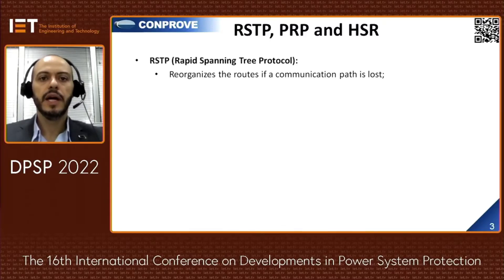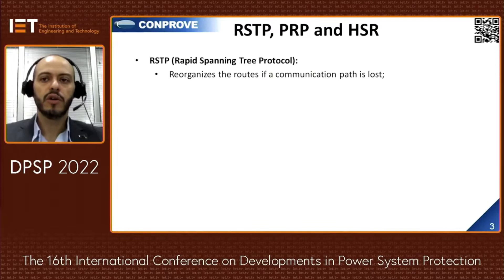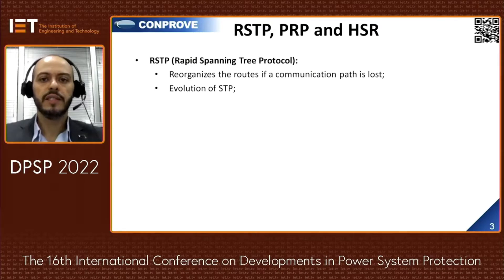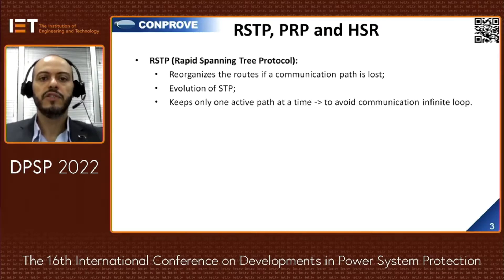The RSTP, Rapid Spanning Tree Protocol, consists of reorganizing the routes when a communication path is lost. This protocol is an evolution of STP and keeps only one active path at a time, in order to avoid communication infinite loops.